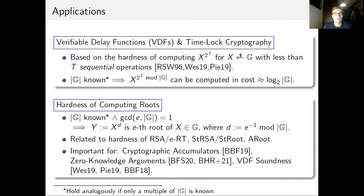If the order of a group is known, it's easy to compute e-th roots where e is co-prime to the group order — simply by inverting e modulo the order and raising the element x to the power d. This relates to the hardness of the e-root problem, the strong root problem, and the adaptive root problem. In RSA groups, the e-root problem relates to RSA, and the strong root problem relates to strong RSA. These assumptions are important for cryptographic accumulators, zero-knowledge arguments, and the soundness of VDF constructions. These reductions hold analogously if only a multiple of the group order is known.